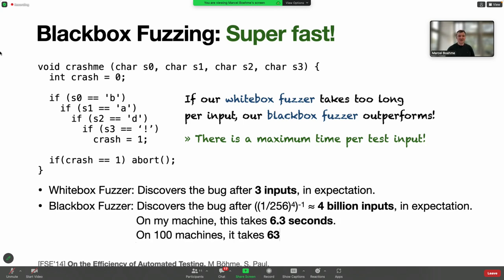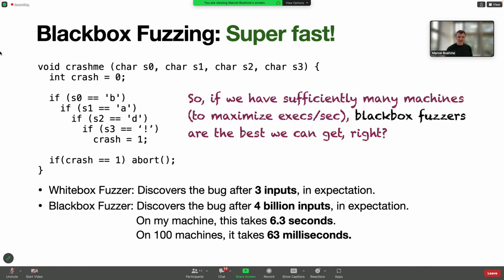On my machine, it takes about 6.3 seconds to generate four billion inputs. If I had 100 machines, it would take 63 milliseconds. We can easily scale bug finding because black box fuzzing is essentially embarrassingly parallel. In this paper, we actually give probabilistic bounds on this maximum time.